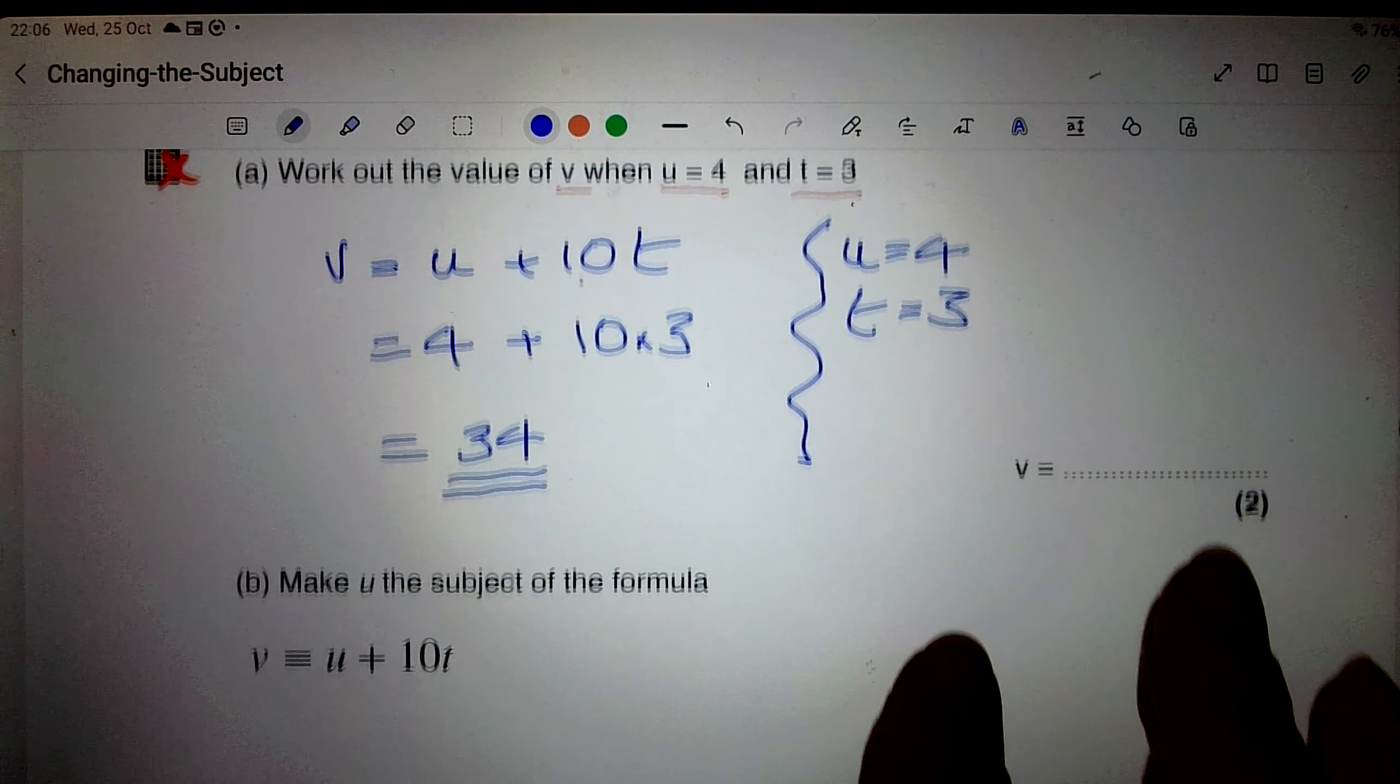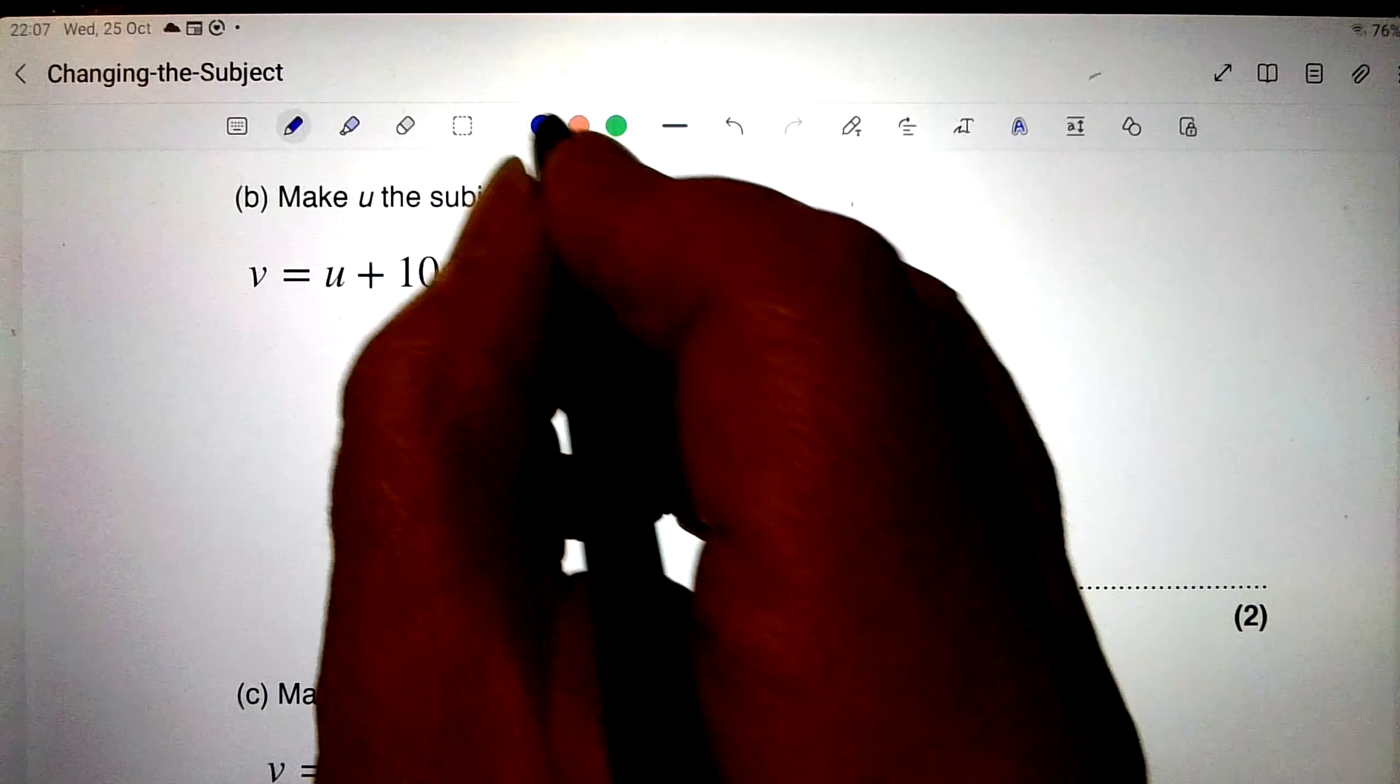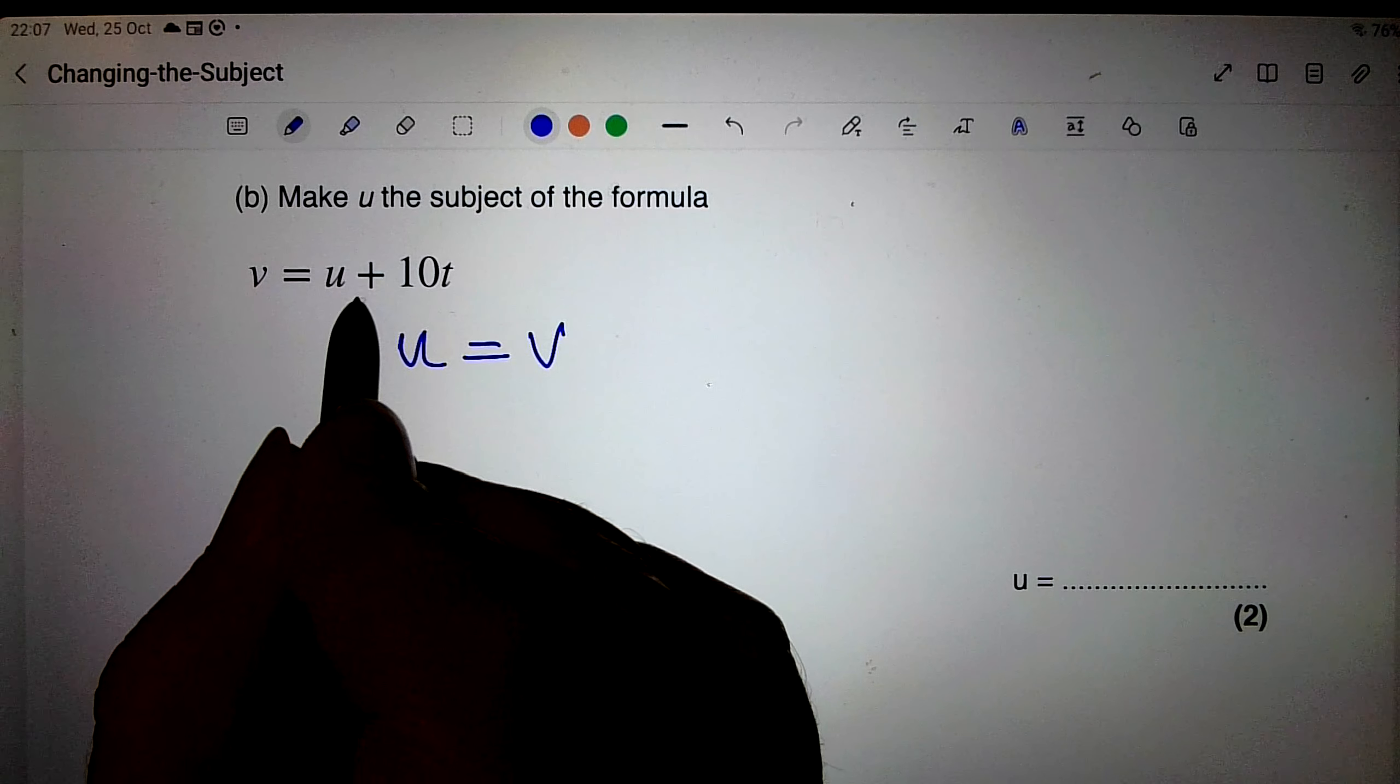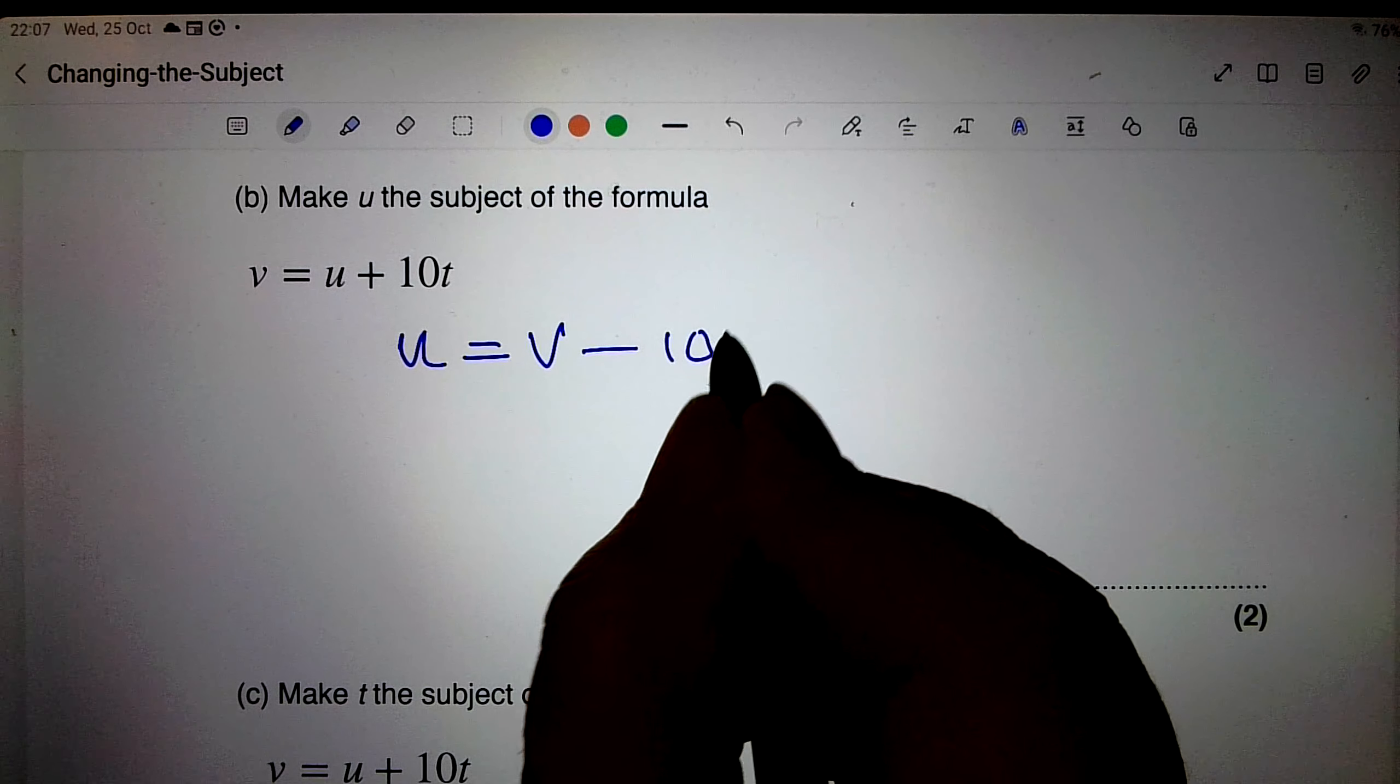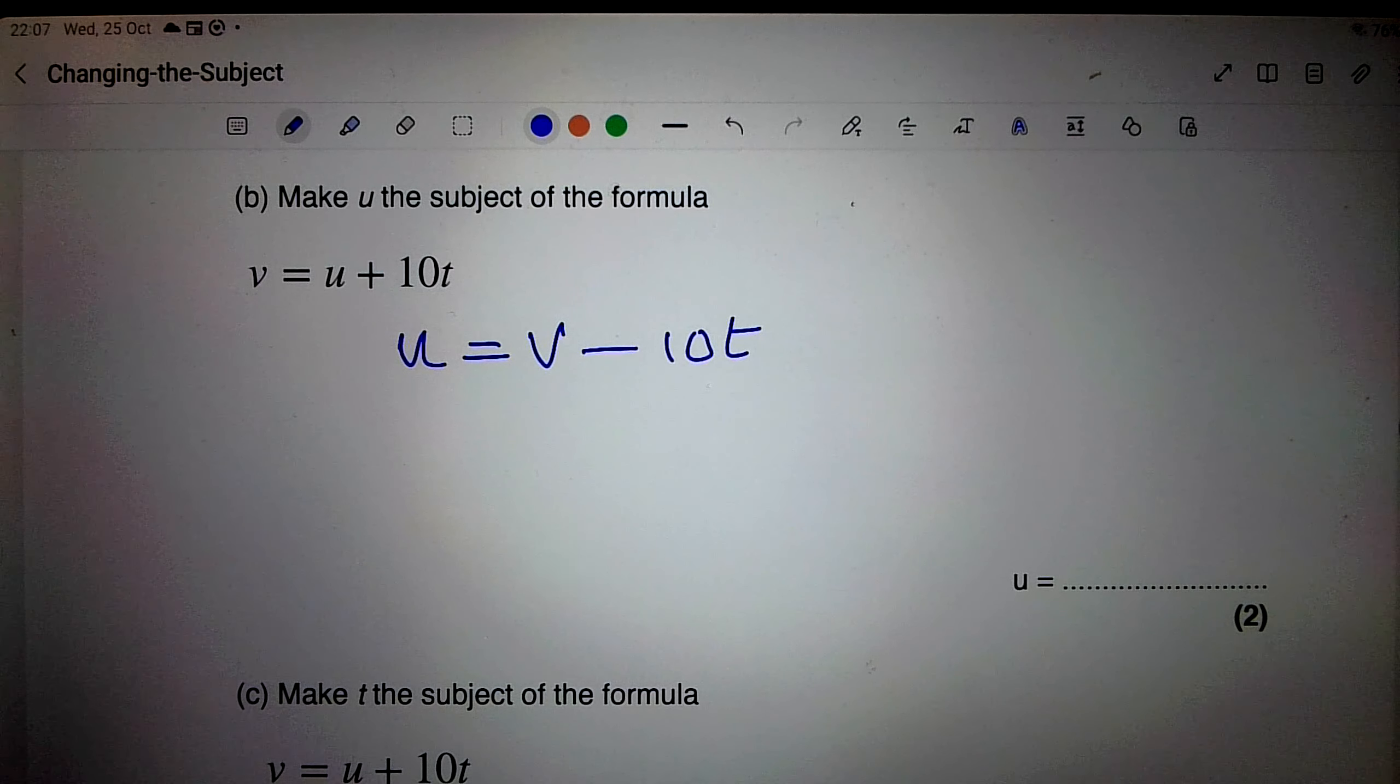Okay, let's have a look at part b now. It says make u the subject of the formula. So I want to have something that looks like u equals something. I want to get the u by itself. Here I've got plus 10t, when I take it to the other side, it's going to be minus 10t. I hope you see how I did that. If you didn't, you need to study it, look at it, understand it, until you can see, oh yes, that's what he did.